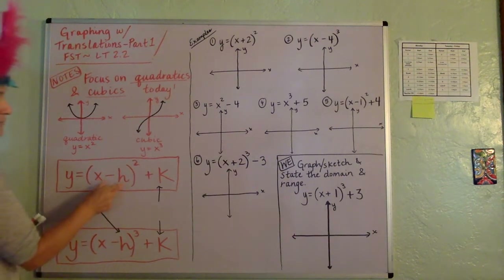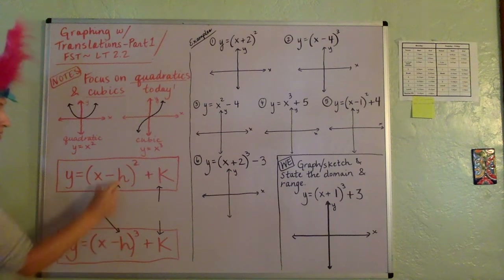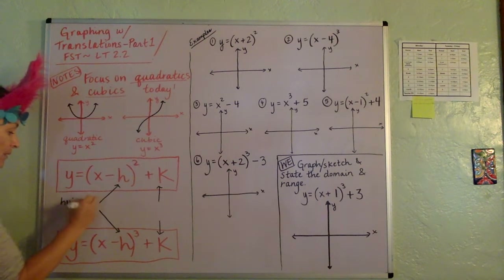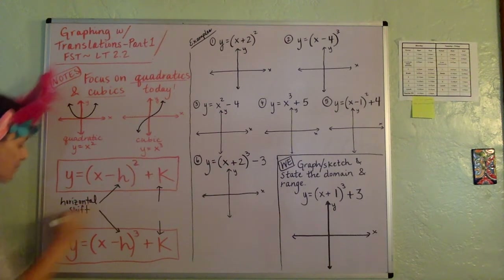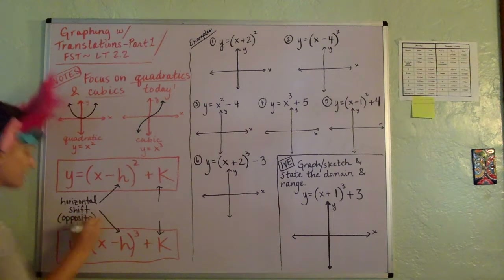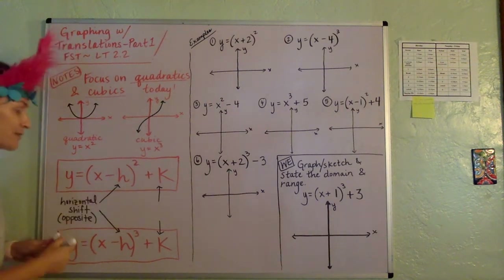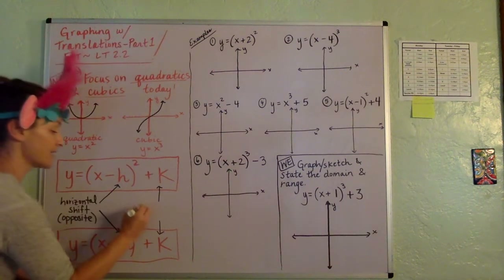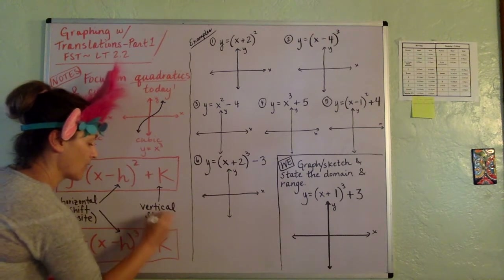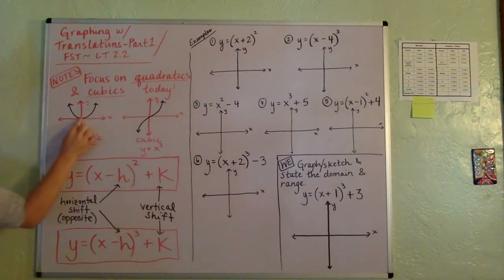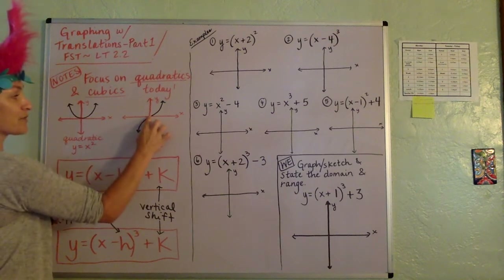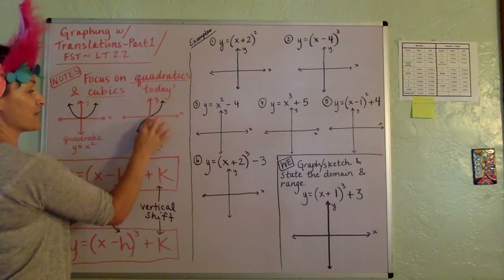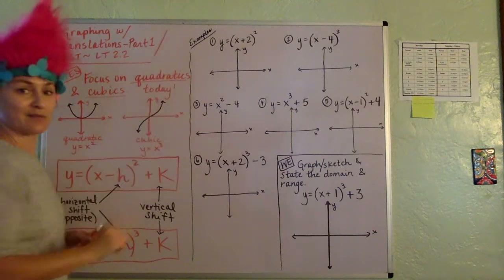What you need to understand is if there's a number, either plus or minus, inside of a parenthesis with the x on either one of these type of graphs, that's a horizontal shift — and you always go the opposite of the way that it says. It's kind of different. And then if there's a number after the exponent, tacked on the end outside of the parenthesis, that's a vertical shift. A horizontal shift moves the vertex or turning point left or right, and a vertical shift moves it up or down.